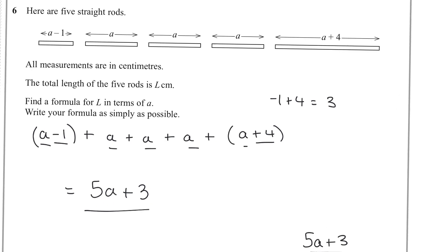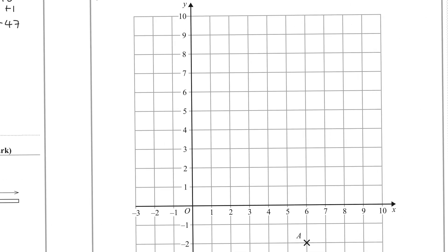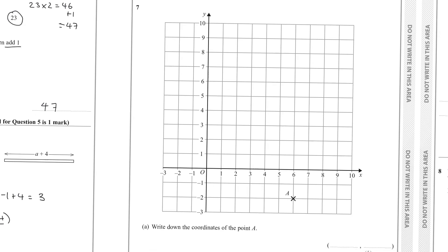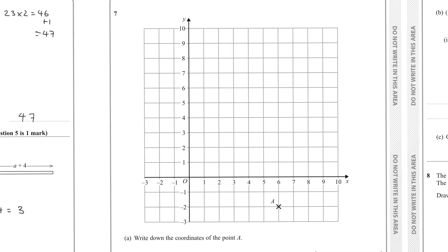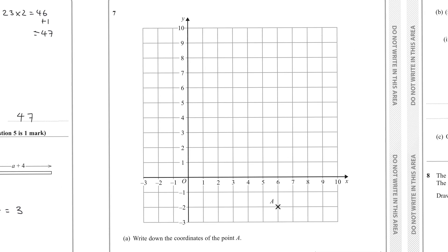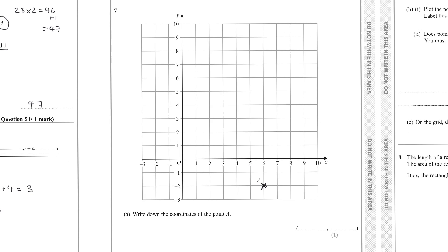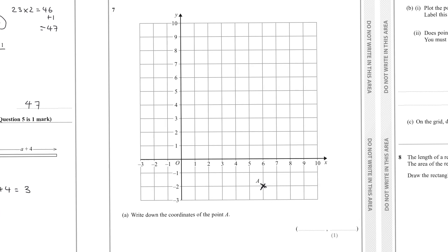Question seven asks for the coordinate of point A. When writing coordinates, write the x value before the y. Point A has x value 6 and y value −2, so the coordinate is (6, −2).